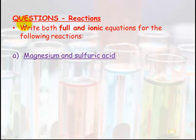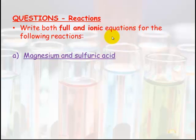Let's have a look at a couple of example questions. I want you to have a go at these. You need to write both full and ionic equations for the next three reactions. Magnesium and sulfuric acid. Think about our three rules — you've got a metal and an acid, so it's going to make a salt plus hydrogen gas. Pause this now and have a go at the next three questions, then come back and correct.